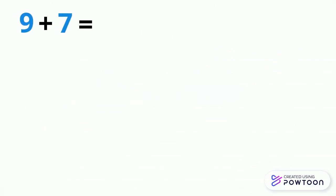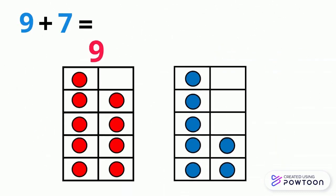What is 9 plus 7 equal to? There are 9 red circles and 7 blue circles. What did 7 give to 9?